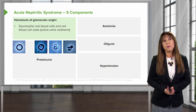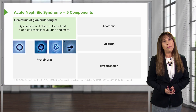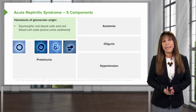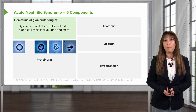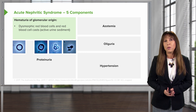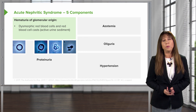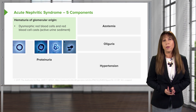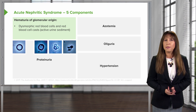We can also see red blood cell casts, where red blood cells collect in the tubule and bind with the Tamm-Horsfall protein, forming a cylindrical cast full of red blood cells with just a slight reddish hue.